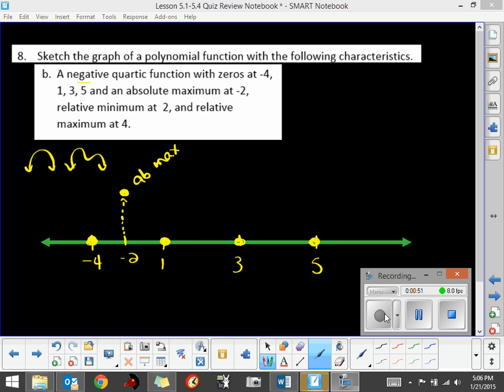It has a relative minimum at 2. So I'm going to put a 2 here. A relative minimum doesn't have to be below necessarily, but I'm going to put this point below. This is our relative minimum. Just in this area, it has to be the lowest point.